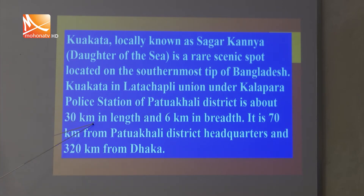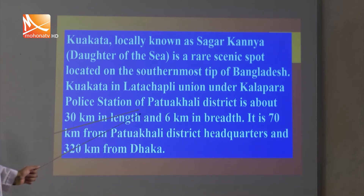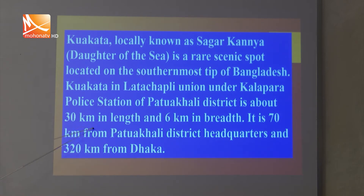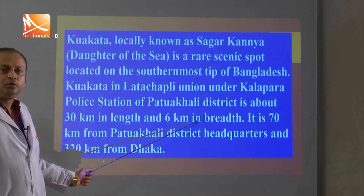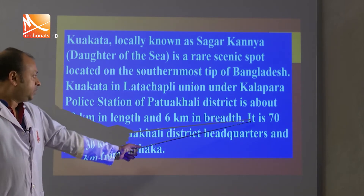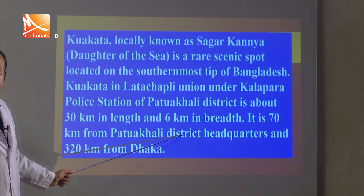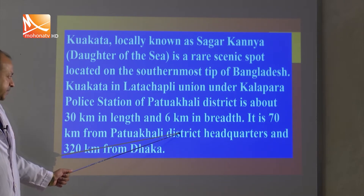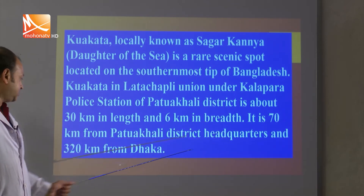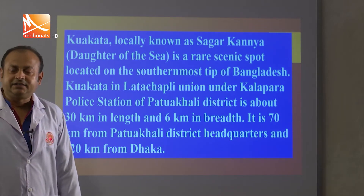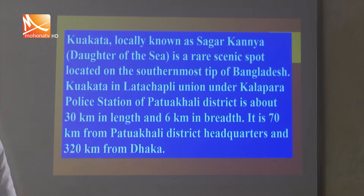Kua Kata is about 30 kilometres in length and 6 kilometres in breadth. It is 70 kilometres from Patuakhali District Headquarters and about 320 kilometres from Dhaka, the capital city.